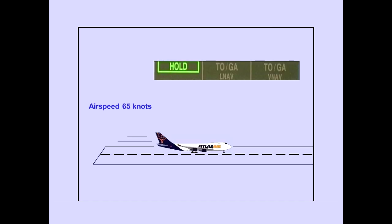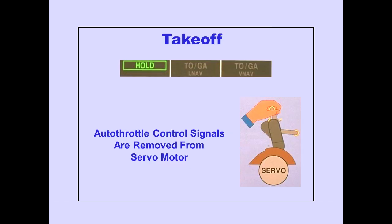As airspeed reaches 65 knots, throttle hold engages. When throttle hold is active, hold is displayed on the PFDs, and autothrottle control signals are removed from the thrust lever servo motor. During the remainder of the takeoff, thrust can be manually adjusted by the flight crew if necessary.